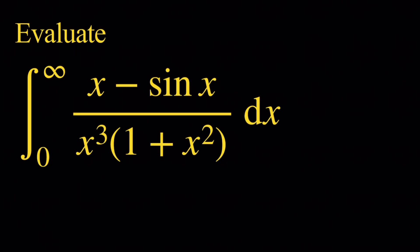Hello everyone and welcome. In this video, we're going to compute the integral from 0 to infinity of x minus sine of x over x cubed times 1 plus x squared dx. Now this integral is improper at infinity. At 0, it's not improper. In fact, the limit of the integrand exists as x approaches 0. Please let me know in the comments what this limit is.